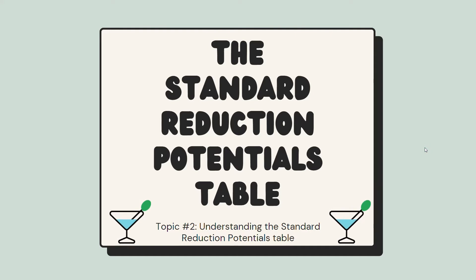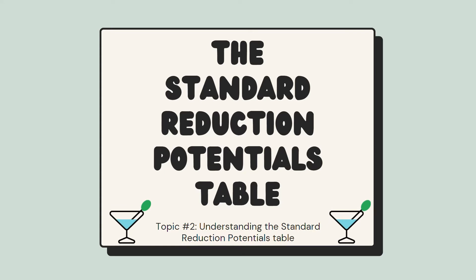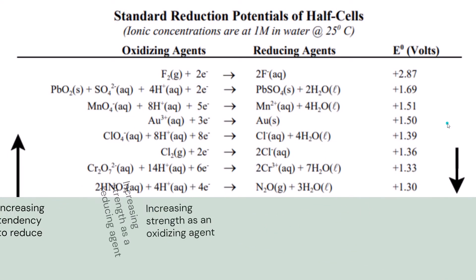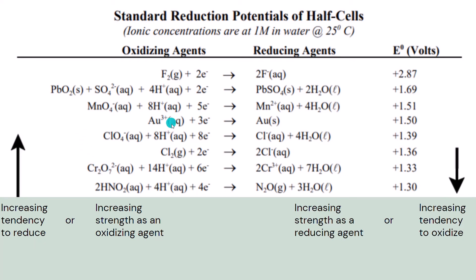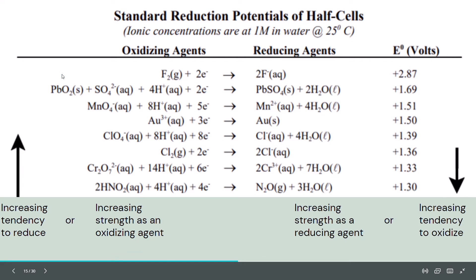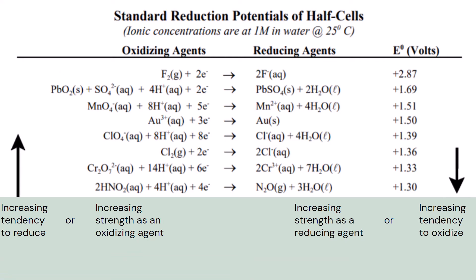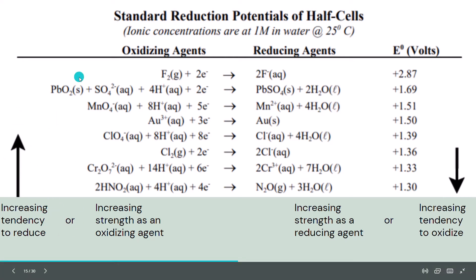The standard reduction potentials table — this table can also be found at the last page of the Nelson Chemistry 12 textbook. The arrows refer to similar things compared to the relative strength of acids and bases table. As we move down the table, the oxidizing agents increase in strength; in other words, the agents have an increasing tendency to be reduced.